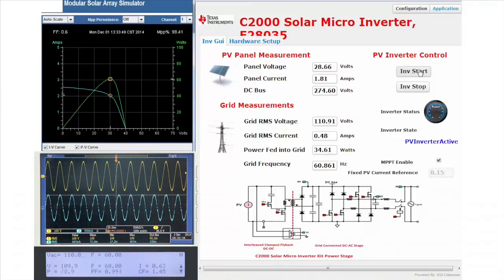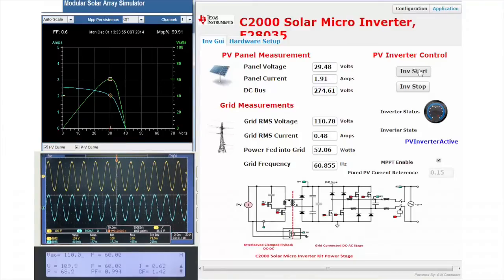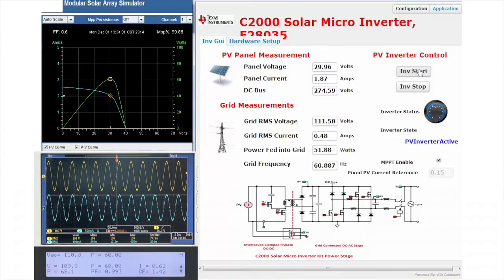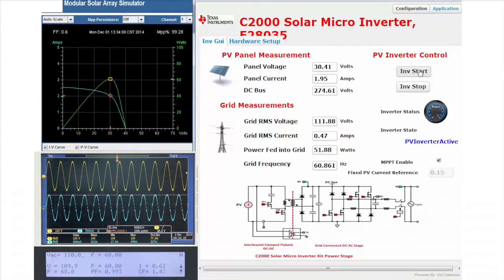We see as the inverter starts, the power sourced from the AC source for the local load will drop and the PV inverter current will increase. MPPT tracking performance can be seen from the GUI associated with the panel emulator and is seen to be close to 99 to 100 percent.